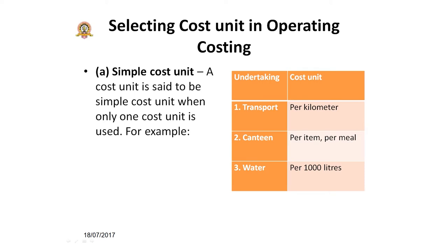In the canteen example, you calculate the cost per item or per meal — that is a simple cost unit. In the case of a water supply company, if you want to calculate what cost you are incurring to supply 1,000 liters of water to a customer, you calculate based on that single unit. So here you are choosing one single unit as a basis to calculate the cost of a service.